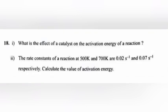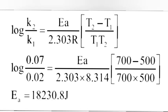Question 18.2: The rate constants of a reaction at 500 K and 700 K are 0.02 s⁻¹ and 0.07 s⁻¹ respectively. Calculate the value of activation energy. Answer: Final answer Ea = 18230.8 J.